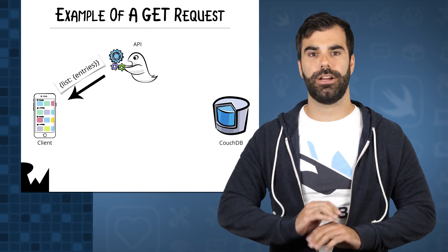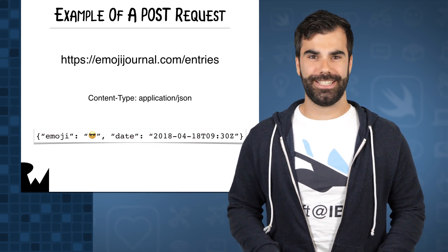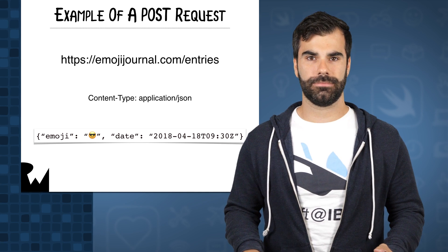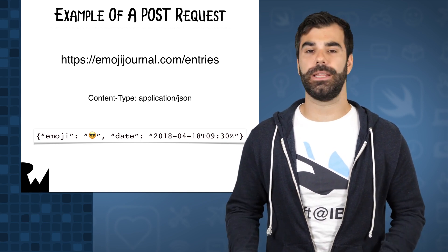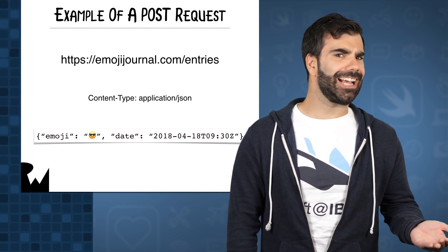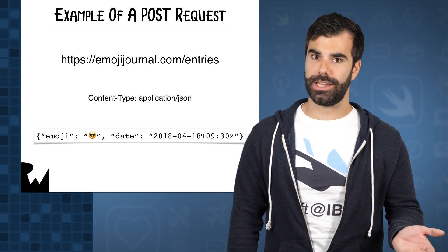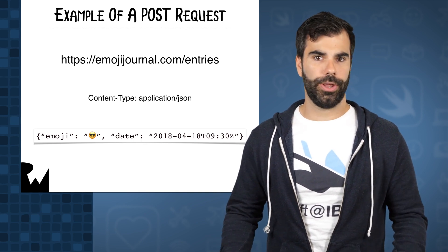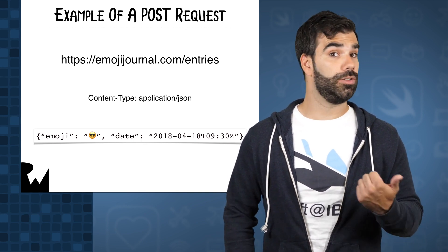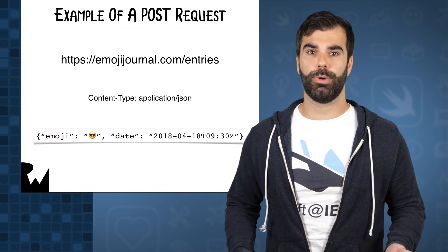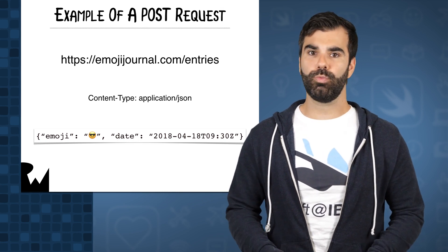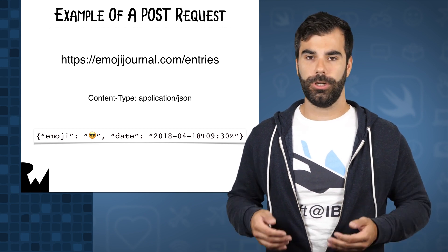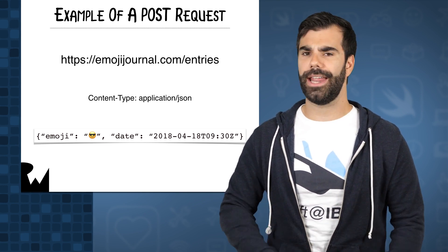A POST request is usually reserved for whenever you want to add an item to a source of data. This type of request usually involves adding data to the body of the request, and not in the actual URL being used to make the request. This is where you have a choice in the type of data that you send with the request. In this tutorial, you'll be sending JSON, or JavaScript Object Notation, requests to your server. You won't have to worry too much about actual JSON in this course, thanks to a handy protocol introduced in Swift 4 called Codable. More on that later.